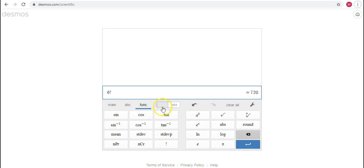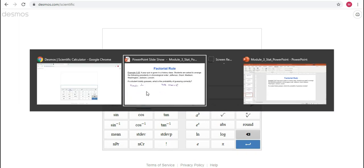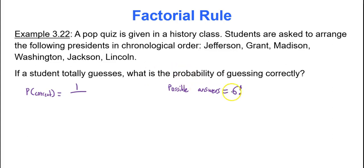So six factorial is equal to 720. So there's only one out of 720 answers that are correct. So one over 720 is the probability of guessing the answer correctly. I suppose if you have a teacher that likes to give pop quizzes that you make sure you study.